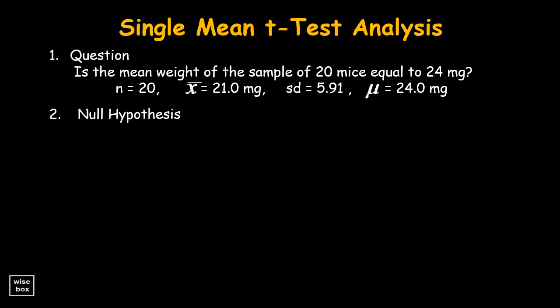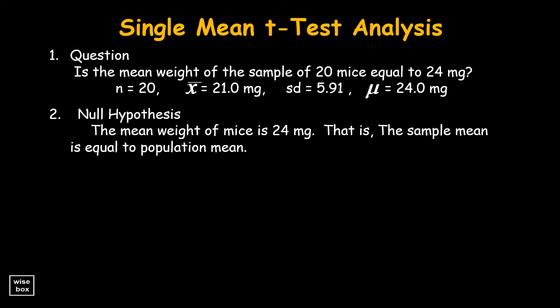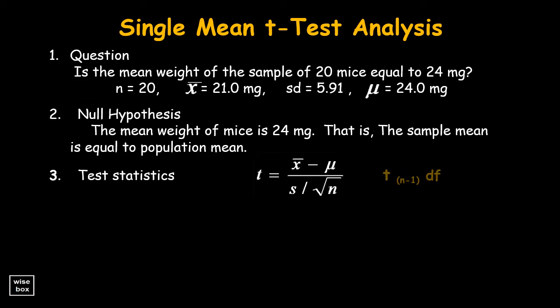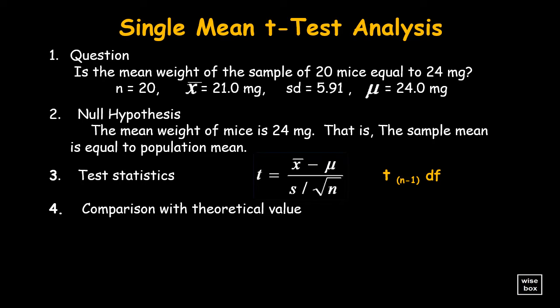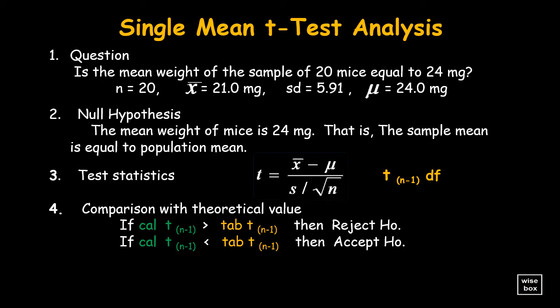Second, state the null hypothesis: the mean weight of mice is 24 milligrams — that is, the sample mean is equal to population mean. Third, write the test statistics such as the formula for t-calculated and t-tabular. Fourth, the decision rule: if calculated t is greater than tabular t, then reject the null hypothesis; if calculated t is less than tabular t, then accept the null hypothesis. Fifth and last, we do the inference statement.